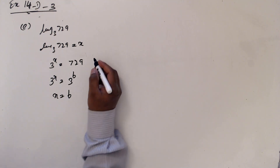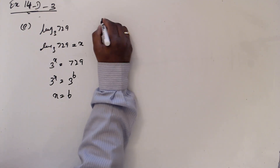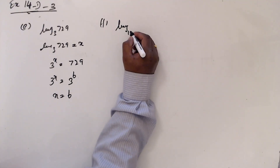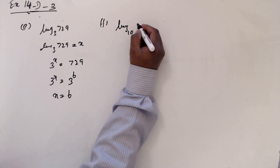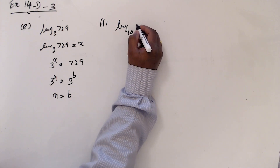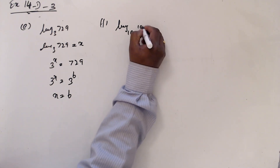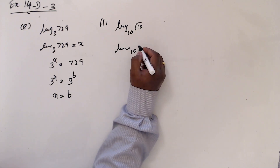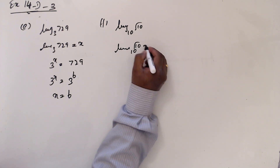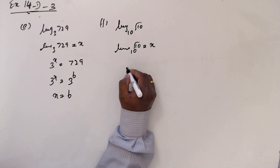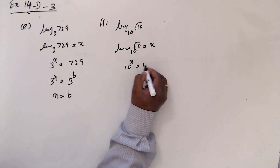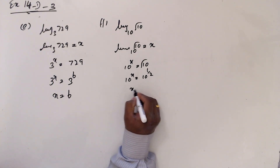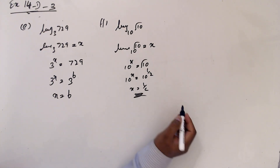The other one cf: log base √10 of 10 equals x. So 10 to the power x equals square root of 10, which is 10 to the half. So x equals half.